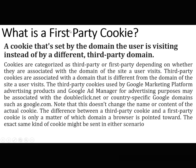What is a first-party cookie? A cookie that's set by the domain the user is visiting, instead of by a different third-party domain. Cookies are categorized as third-party or first-party depending on whether they are associated with the domain of the site a user visits. Third-party cookies used by Google Marketing Platform advertising products and Google Ad Manager may be associated with doubleclick.net or a country-specific Google domain. The difference between a third-party and first-party cookie is only a matter of which domain a browser is pointed towards.